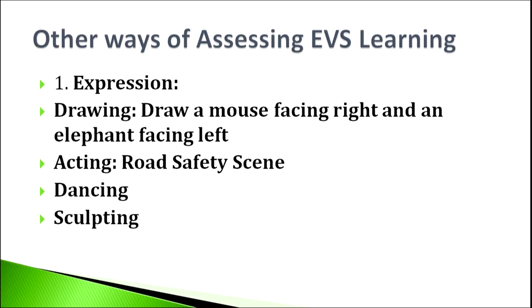First is expression. Expression can be written expression, such as a creative writing exercise. Expression can also be drawing. For example, a question like: draw a mouse facing right and an elephant facing left. Such a question is not an ordinary drawing question — it has inherent objectives. One, it assesses whether the student has understood directions properly. Two, it also assesses whether students have a comparative idea of sizes — how they draw the mouse and elephant shows whether they compare sizes and draw appropriately.